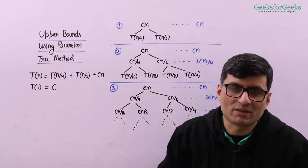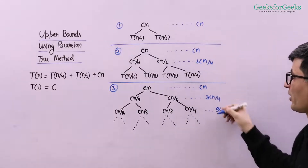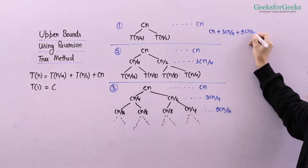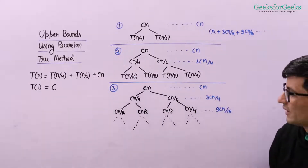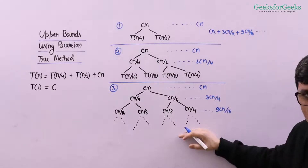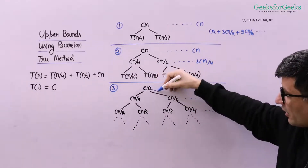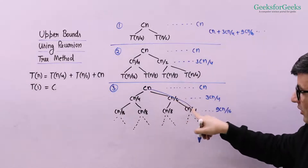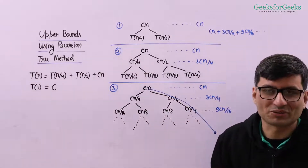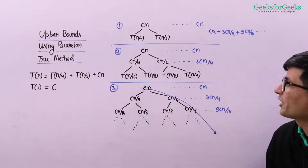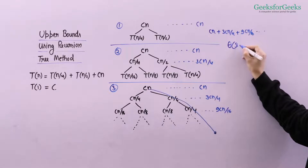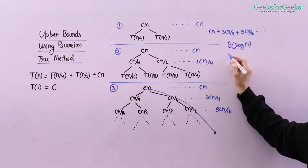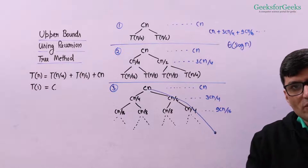We take the geometric progression Cn + 3Cn/4 + 9Cn/16 + ... If we consider the tree to be full, we need to find the depth of the rightmost leaf. Since that side reduces by 2 — n, n/2, n/4, and so on — the number of terms is Θ(log n). The common ratio of the geometric progression is 3/4, which is less than 1.